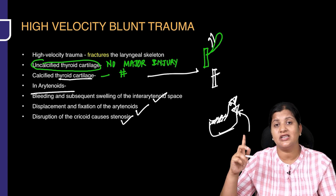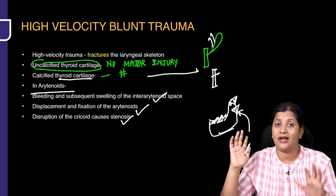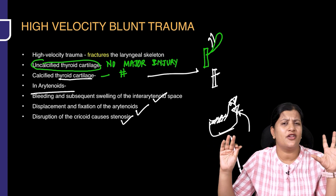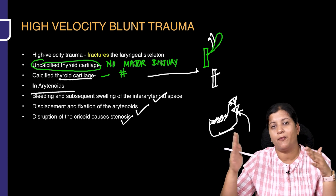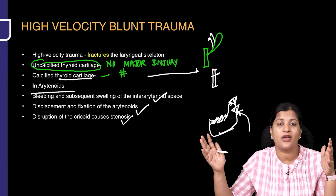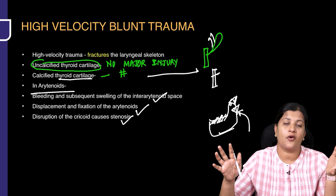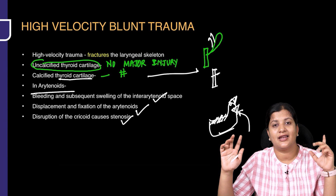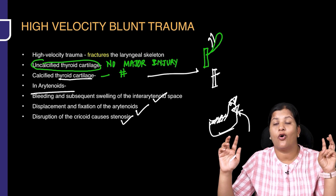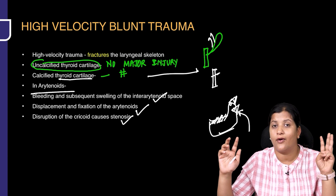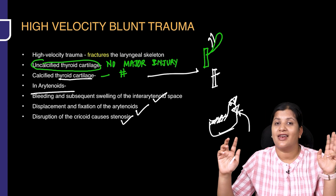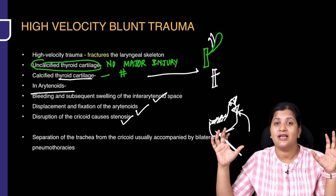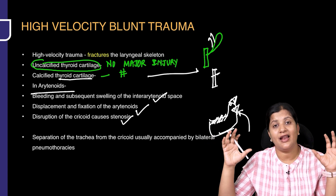If there is cricoid injury, it could result in stenosis. So with a high velocity blunt trauma, it depends on the type of cartilage: uncalcified — usually nothing much except possible epiglottis dislocation; calcified — expect fractures. Injury to the arytenoids can cause bleeding, disruption, or cricoid injury resulting in cricoid stenosis. These are the features seen with high velocity trauma affecting the laryngeal skeleton.